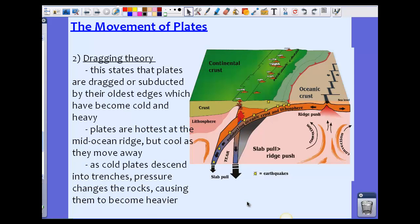The second theory is called the dragging theory. This states that plates are dragged or subducted by their oldest edges, which have become cold and heavy. In this picture, we see that upwelling at the mid-ocean ridge and the convection current pushing the plates in the direction of the convection current. The plates are hottest at the mid-ocean ridge, but as they're moving away, they're cooling down, like we talked about in the convection current theory.